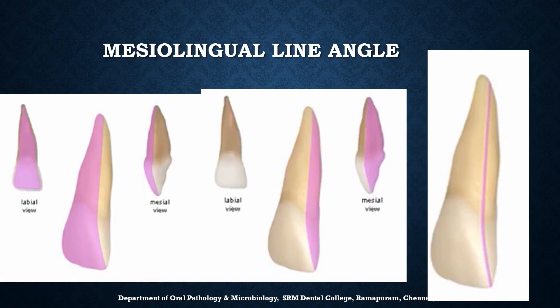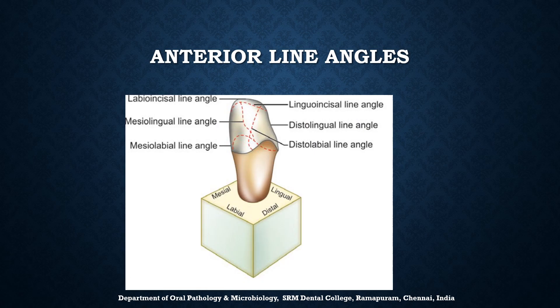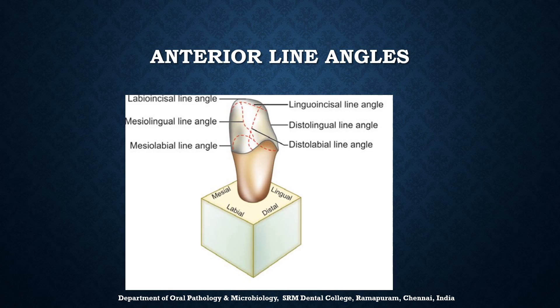Line angles and point angles are named based on the combination of surfaces that form them. For example, in the maxillary central incisor, the junction of the labial surface and the mesial surface forms the mesiolabial line angle. There are six line angles for anterior teeth: the labioincisal line angle, mesiolingual line angle, mesiolabial line angle, linguoincisal line angle, distolingual line angle, and distolabial line angle.